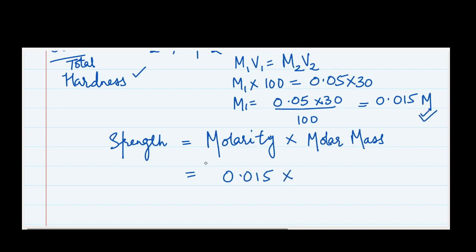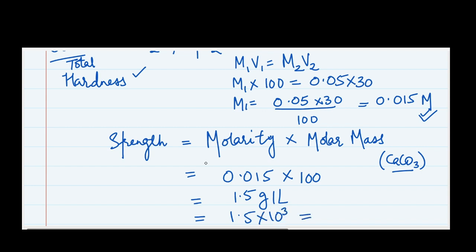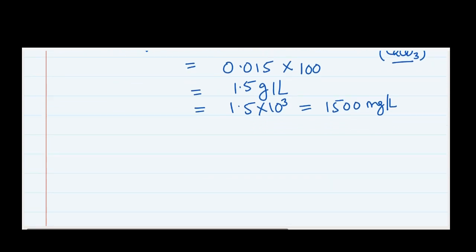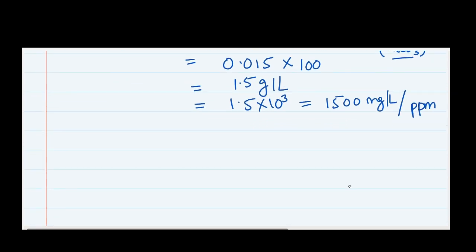The molarity value is 0.015. The molar mass to use is 100, because molar mass of hardness is taken for CaCO3 (calcium carbonate) as a reference — so 100 is the molar mass for CaCO3. Multiplying 0.015 × 100 gives 1.5 gram per liter. Since the hardness unit is milligram per liter or ppm, multiply by 1000 to get 1500 milligram per liter, or 1500 ppm. This is the total hardness.